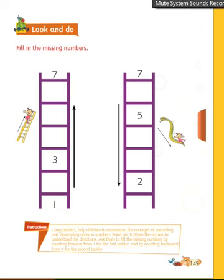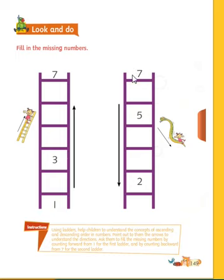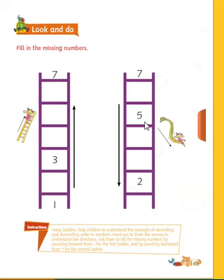Now, in the previous class we took Chapter 7 of the UKG Maths — forward and backwards numbers. I'll continue the same class. Fill in the missing numbers: this is the forward number, and from down to up you must go. This is the backwards number — up to down you must come. Forward number means down to up you must go; backwards number means up to down you must come.